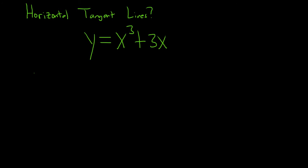So to start, we have to remember that the derivative is the slope of the tangent line. And so the slope of a horizontal line is 0.